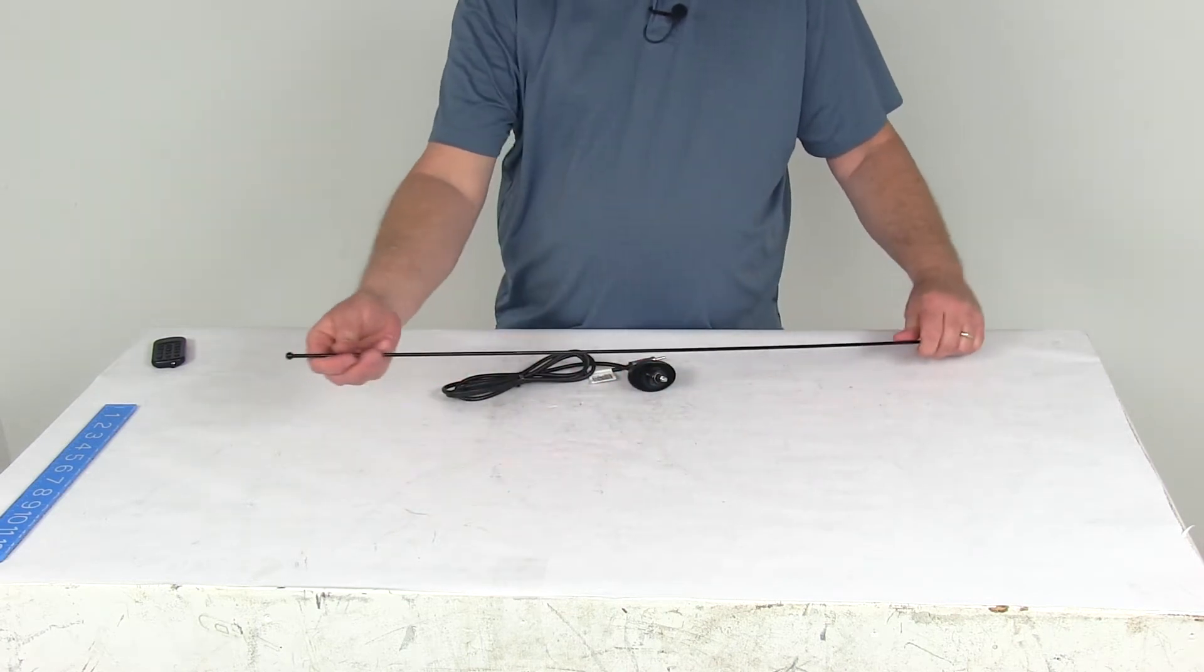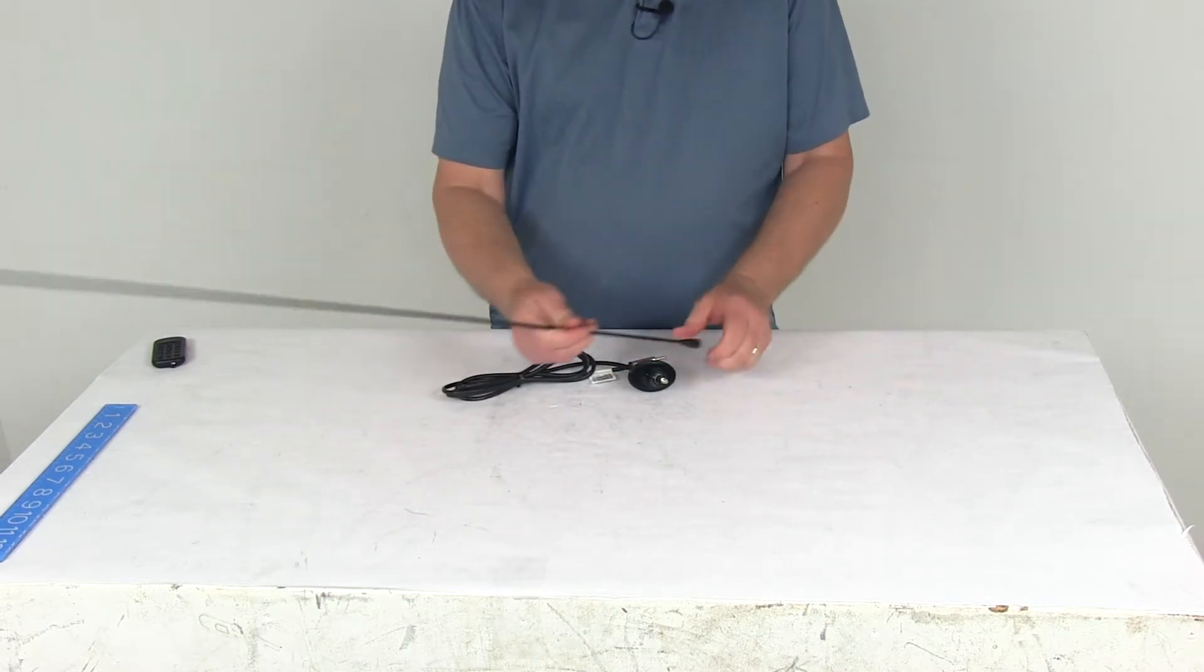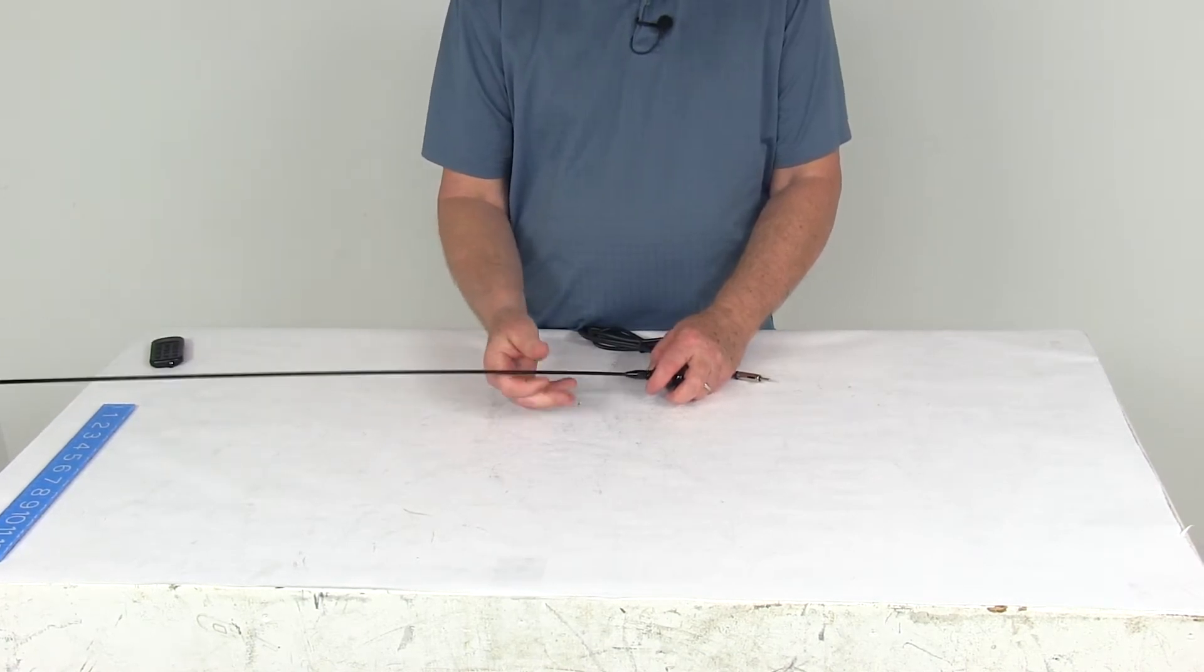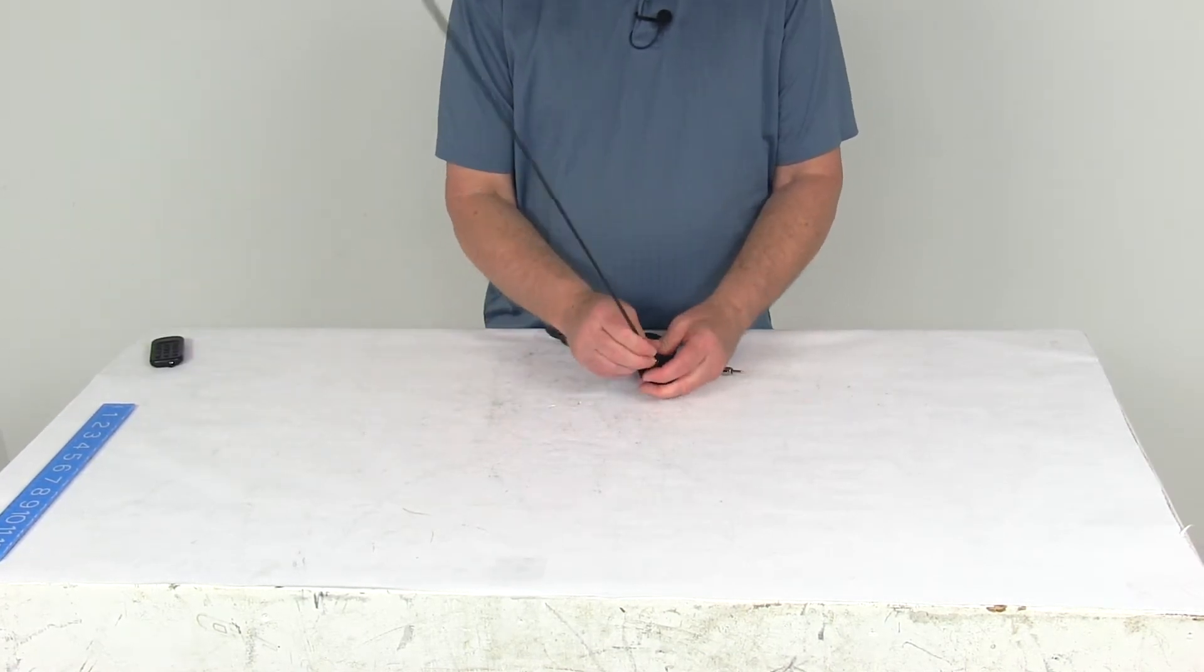It does use this 31-inch long flexible mast, and the mast would just screw onto the base, just like that. And then you tighten it down. That'll give you your antenna.